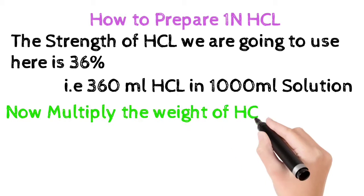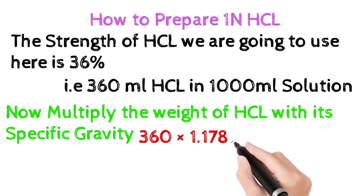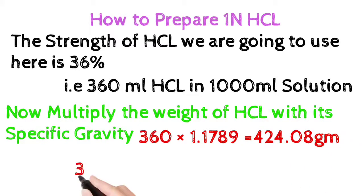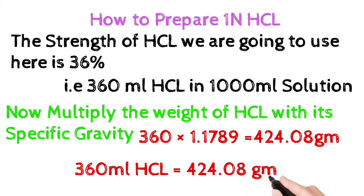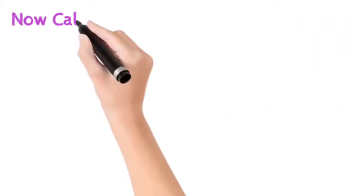Now multiply the weight of the HCl with its specific gravity. The specific gravity of HCl is 1.1789, then we get 424.08 grams. That is 360 ml of HCl contains 424.08 grams of HCl.